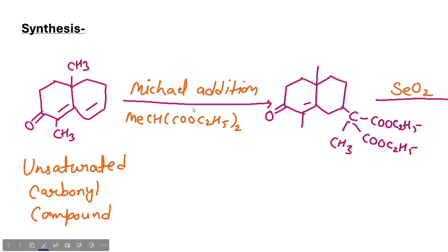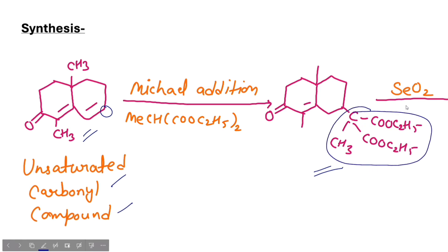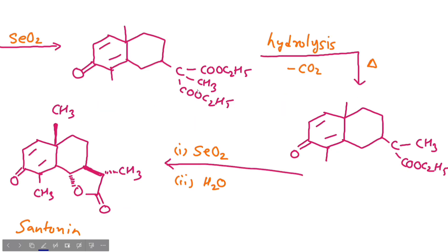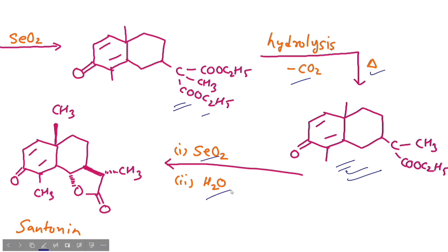Let's talk about synthesis. The synthesis starts with an unsaturated carbonyl compound. We react this unsaturated carbonyl compound with a particular carbonyl group. Then we use hydrolysis and apply heat, which causes carbon dioxide to be released. Finally, we treat it with the appropriate reagents to obtain Santonin.